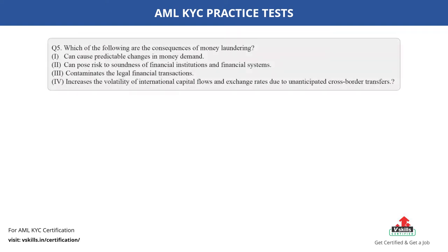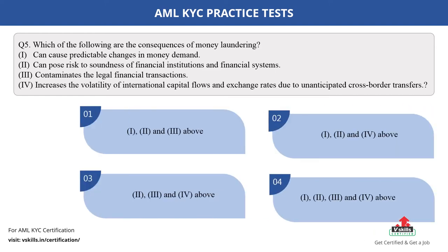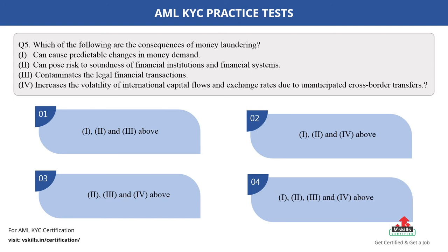Question number 5. Which of the following are the consequences of money laundering? 1. Can cause predictable changes in money demand; 2. Can pose risk to soundness of financial institutions and financial systems; 3. Contaminates the legal financial transactions; 4. Increases the volatility of international capital flows and exchange rates due to unanticipated cross-border transfers. The options are: A. One, two and three above; B. One, two and four above; C. Two, three and four above; D. One, two, three and four above. The correct answer is option D.